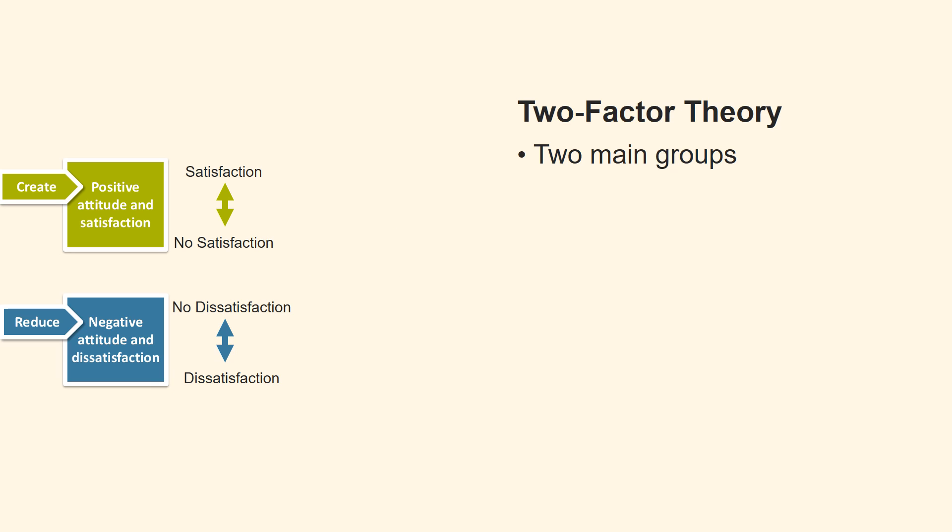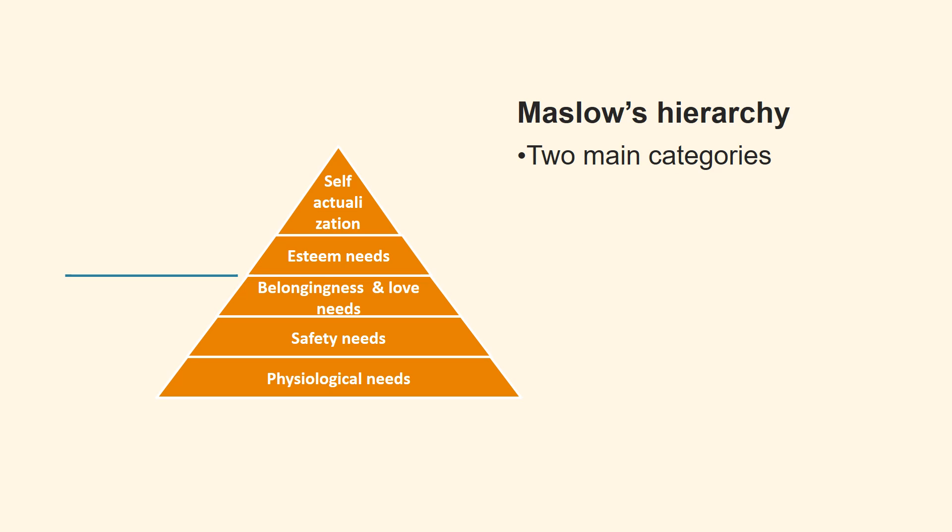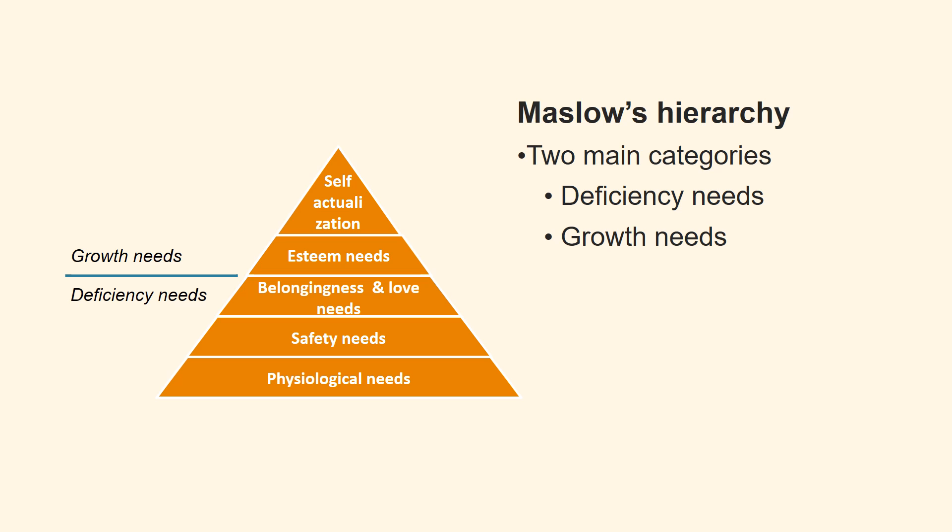We start with Herzberg's two-factor theory, which is divided into two main groups of factors: hygiene factors and motivator factors. The second part of the comparison consists of Maslow's hierarchy of needs, which consists of five levels divided into two main categories: deficiency needs and growth needs.